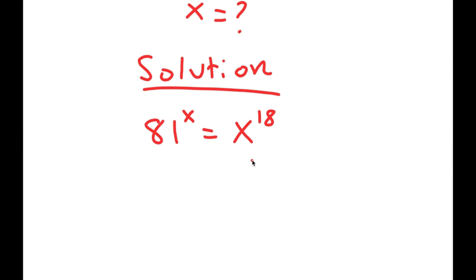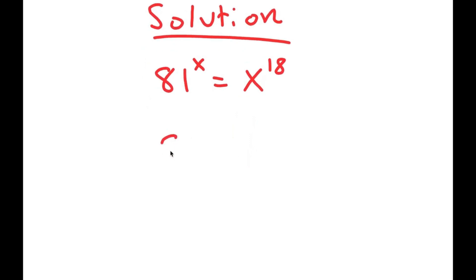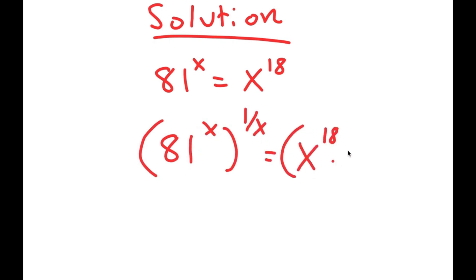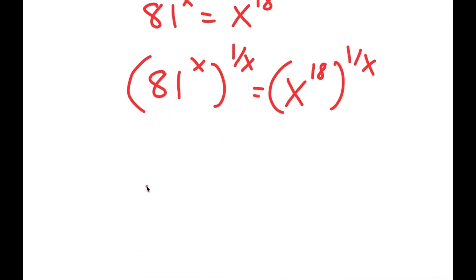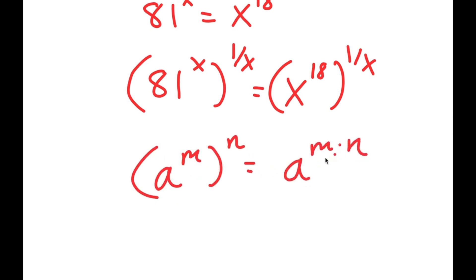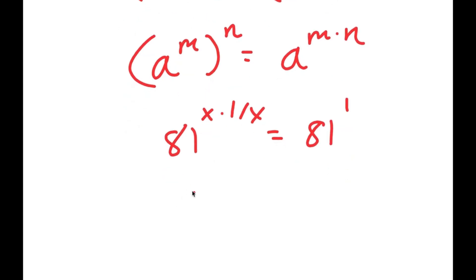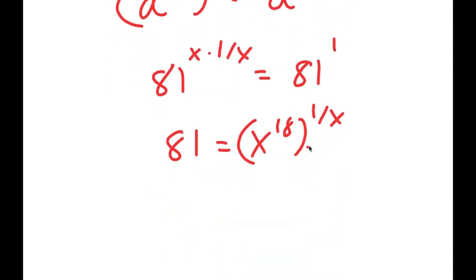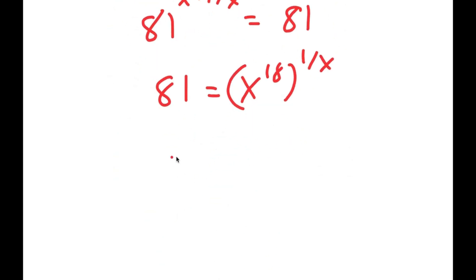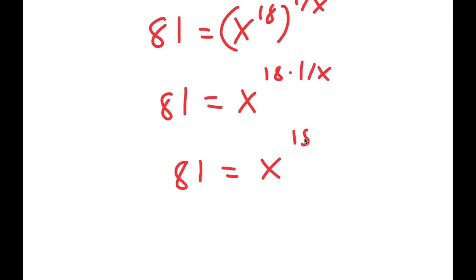I'm going to take the power of 1 over x on both sides. So I get 81 to the power of x, to the power of 1 over x, is equal to x to the power of 18, to the power of 1 over x. If I have something in the form a to the power of m to the power of n, this equals a to the power of m times n. So 81 to the power of x times 1 over x equals 81 to the power of 1, which is 81. And x to the power of 18 to the power of 1 over x is x to the power of 18 over x.